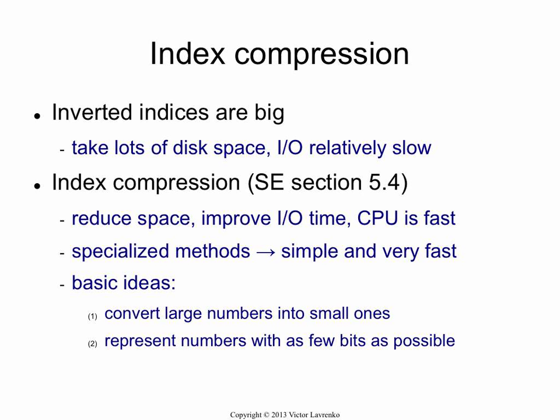So the more you can compress your data, the better it is for you, because your memory and CPU are a lot faster than the interface to disk. Compression, which is usually an expensive thing, doesn't really matter here because you will offset it by lower costs of reading the data from disk. This will reduce the space and improve the IO time. To keep things fast, we're going to use very specialized methods — not generic compression algorithms, but compression algorithms specific to inverted indices. These are very simple, but they do give a substantial amount of compression.